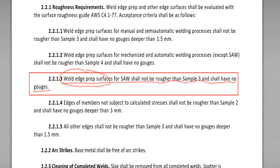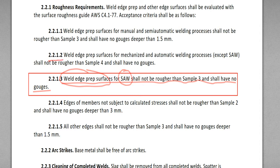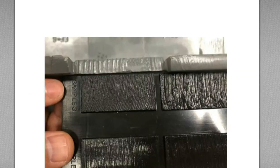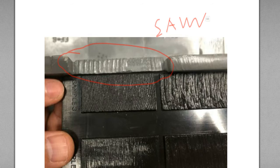So, this weld edge preparation surfaces for SAW — specifically in 2.2.1.2, except SAW mechanized or automatic — SAW means mechanized or automatic welding processes. But here, except SAW. In 2.2.1.3, it specifically says SAW, submerged arc welding, shall not be rougher than sample 3 and shall have no gouges.